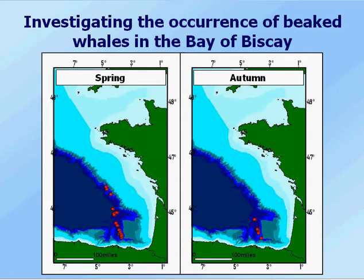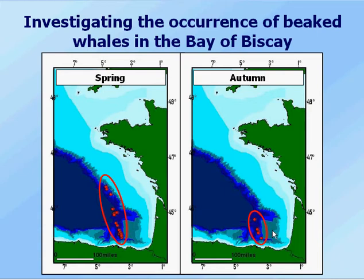The first thing we've learnt is that there are quite clear seasonal movements in Cuvier's beaked whales that are changing the way they use the Bay of Biscay. In spring, sightings are spread throughout the deep waters of the Bay of Biscay, occurring in both the southern canyons and along the northern shelf edges. However, in autumn we get a very different picture: the distribution is very much concentrated just down in the southern canyons. This is really the first concrete evidence for seasonal movements of beaked whales, which is critical for understanding how human activities will affect them and how we can mitigate these by determining what can happen when.